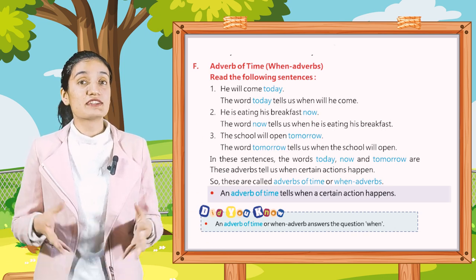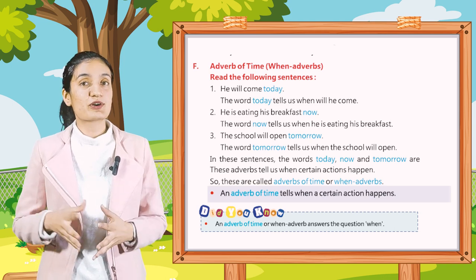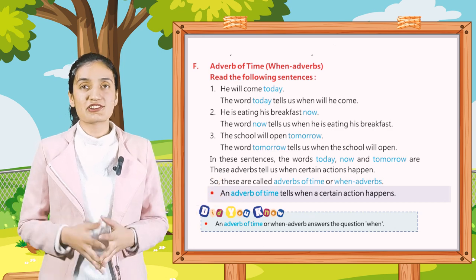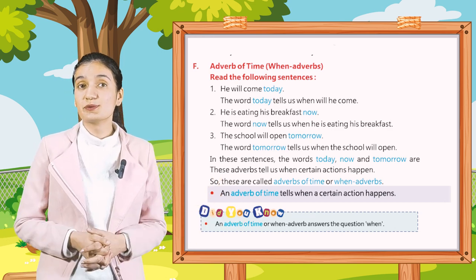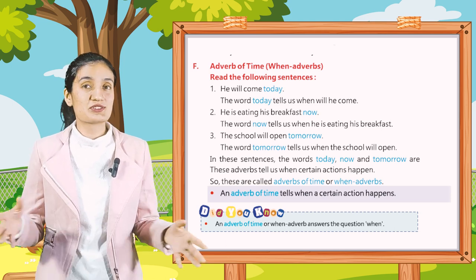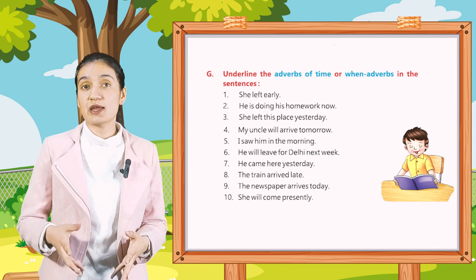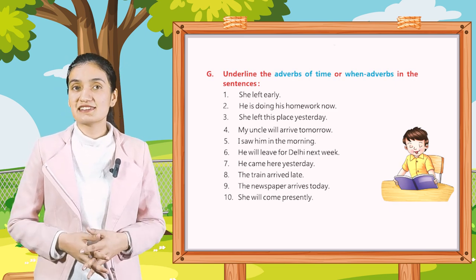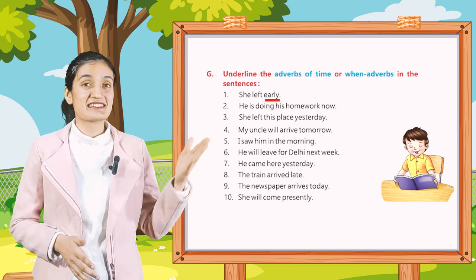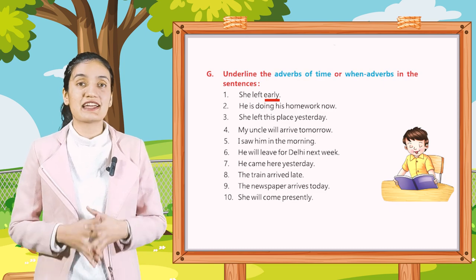These adverbs tell when certain actions happen, so they are called adverbs of time or when adverbs. An adverb of time tells when a certain action happens. An adverb of time answers the question: when? Part G: Underline the adverb of time in the following sentences. First: She left early — underline 'early'. Second: He is doing his homework now — underline 'now'. Similarly, underline the other adverbs.